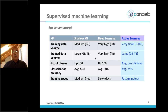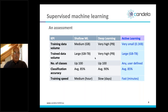Another criterion for comparison is classification accuracy. Classical shallow machine learning achieves on average 85%. Deep learning performs better, averaging 90%. Active learning averages around 85%, so not as competitive as deep learning in accuracy. However, because of the flexibility and agility of the method, it is extremely useful.